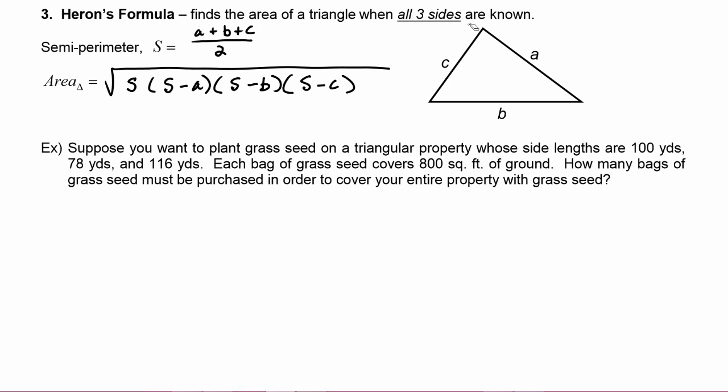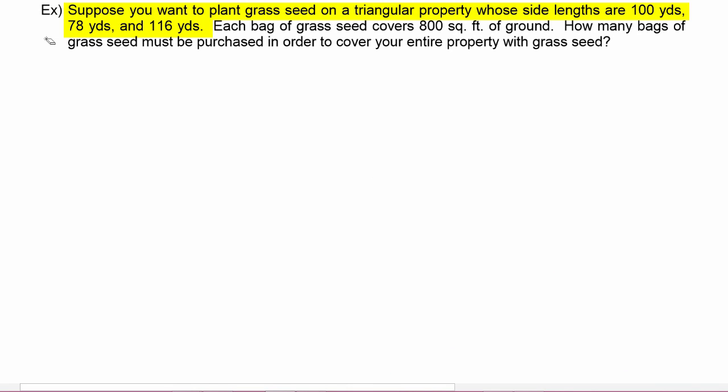So let's try that on this next example problem. Suppose you want to plant grass seed on a triangular property whose side lengths are 100 yards, 78 yards, and 116 yards. Well let's draw a little picture. We've got sides of 100 yards, 78 yards, and 116 yards.